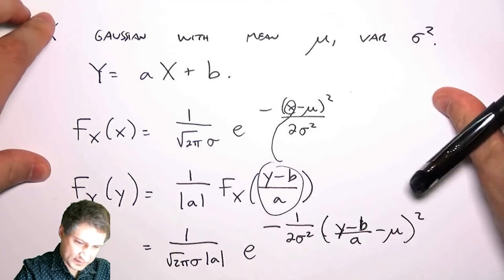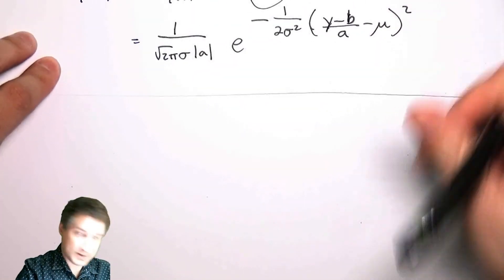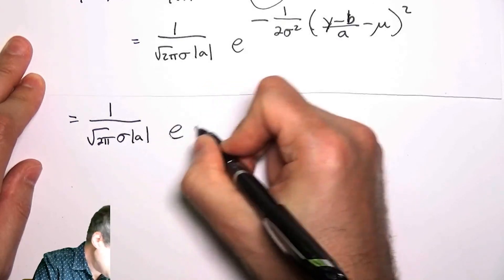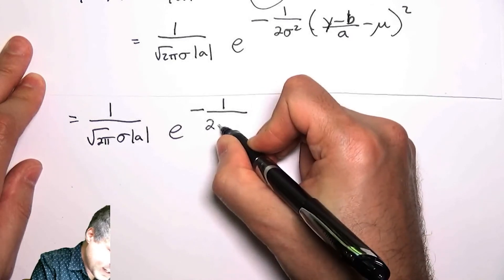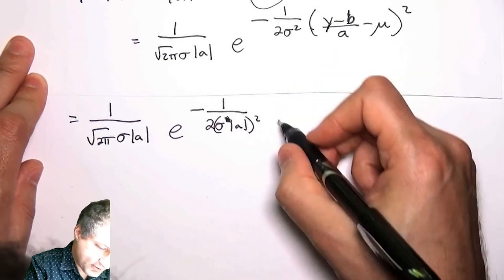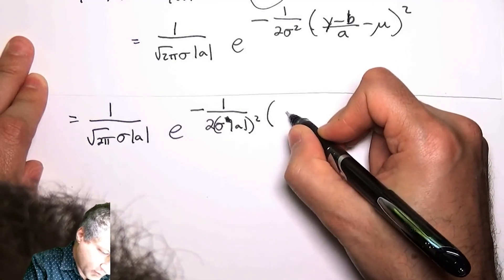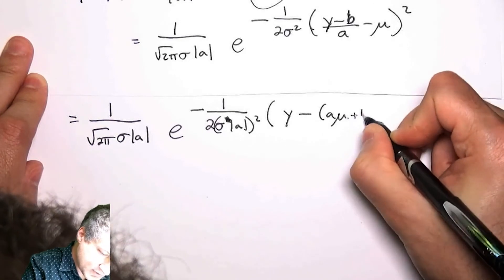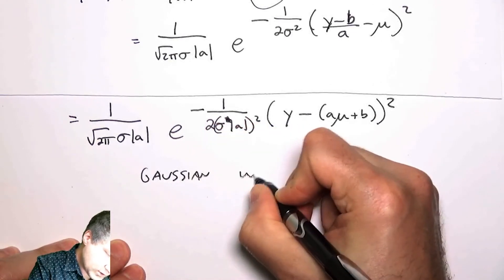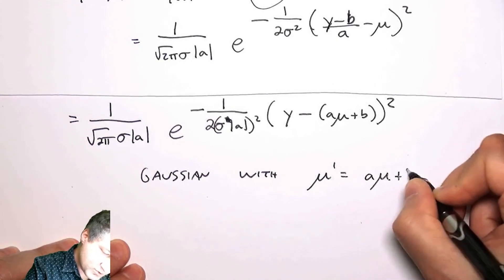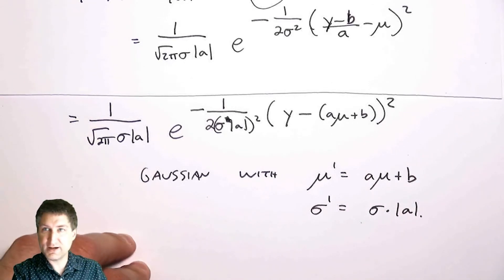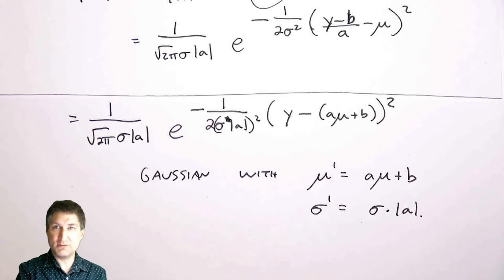Expanding and rearranging, I can pull the a out and rewrite this as a Gaussian with new mean aμ + b and new standard deviation σ·|a|. This shows that linearly transforming a Gaussian produces another Gaussian — and this is actually why, when converting a general Gaussian to a standard normal (mean 0, standard deviation 1), that transformation works.